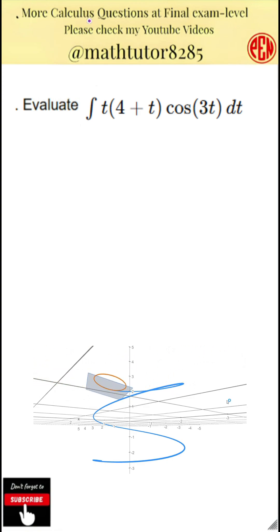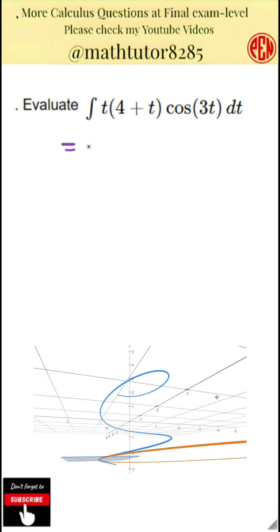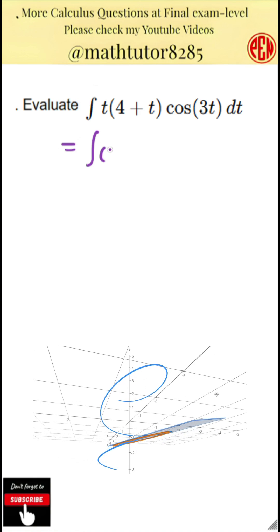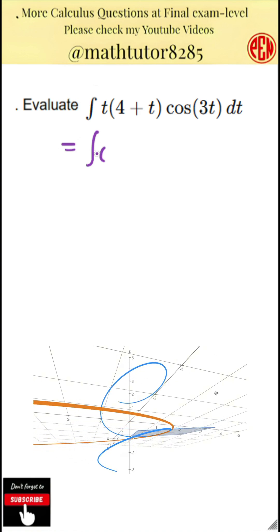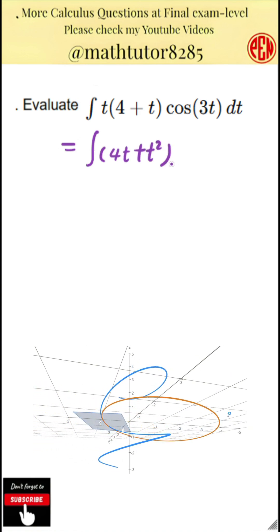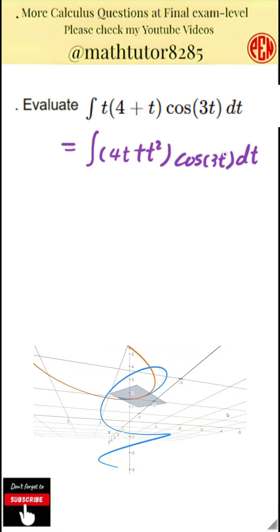The first step is to expand the expression. Before starting the integration process, we expand the product. Multiplying t by the quantity 4 plus t gives us 4t plus t squared. So now we are integrating the product of the expression 4t plus t squared and cosine of 3t.